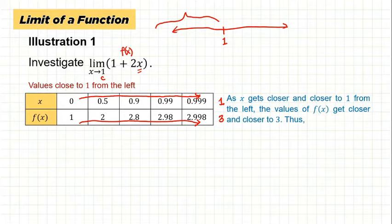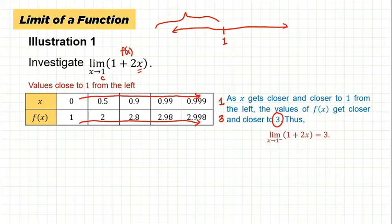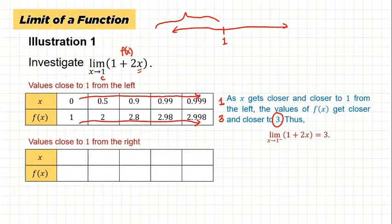Since the left-hand limit is the value that f(x) approaches as x approaches c from the left, and our function approaches 3 as x approaches 1 from the left, the left-hand limit — the limit of 1 + 2x as x approaches 1 from the left — is equal to 3. Now let's find the right-hand limit.